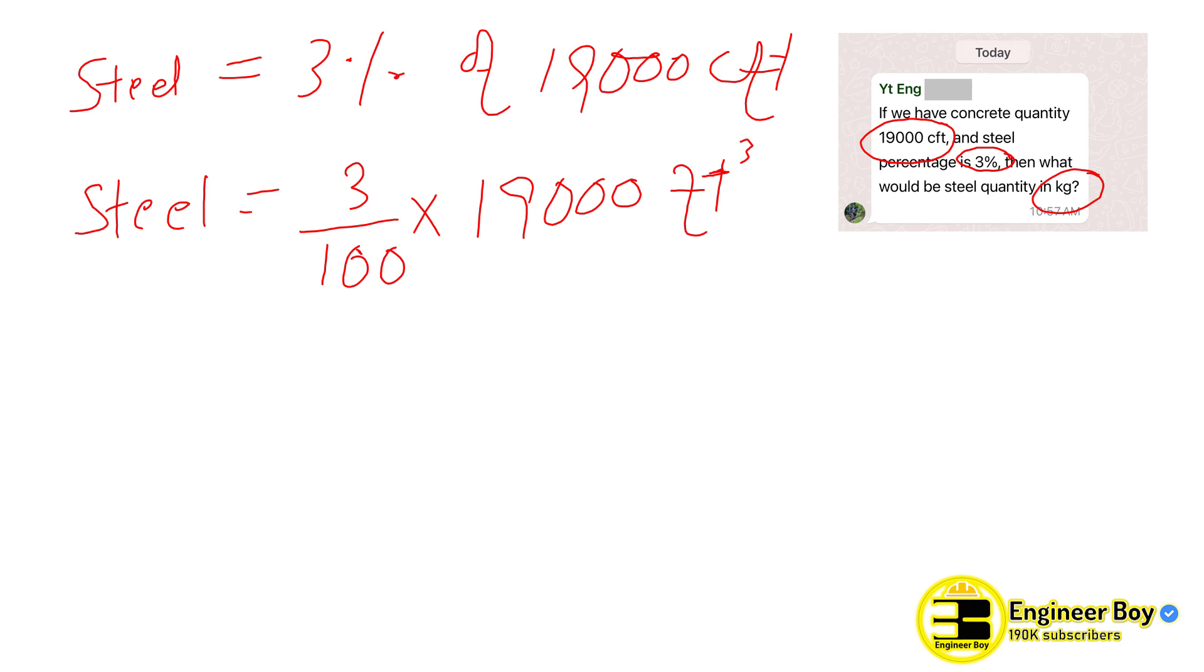These two zeros cross each other. Now we have steel which must be 3 times 190 cubic feet. That means 190 times 3, and it is straightforward which must be 570 cubic feet.